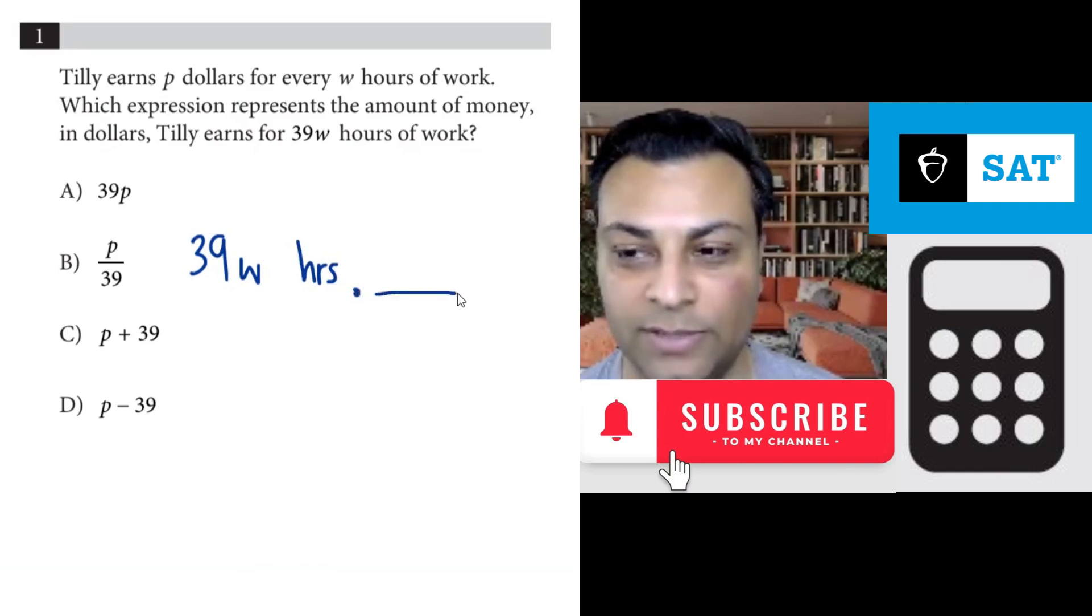You multiply by something and you wind up with dollars. How do I do that? Well I would like hours on the bottom, or hour, it doesn't matter, and dollars on the top.